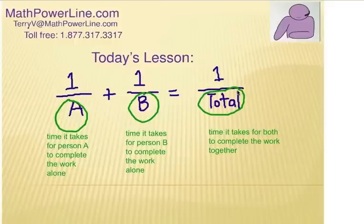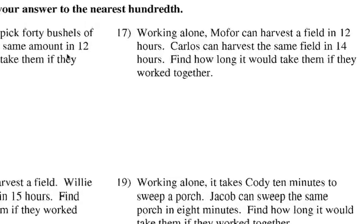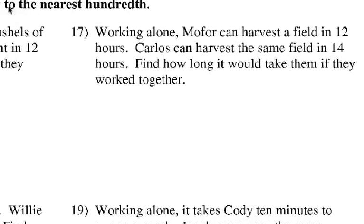So here's your problem that I want to walk you through. I'll show you a shortcut. Remember for these problems, we're going to round the answer to the nearest one hundredth. Looking at number 17, working alone, Mofor can harvest a field in 12 hours. Carlos can harvest the same field in 14 hours. Find how long it would take them if they worked together.